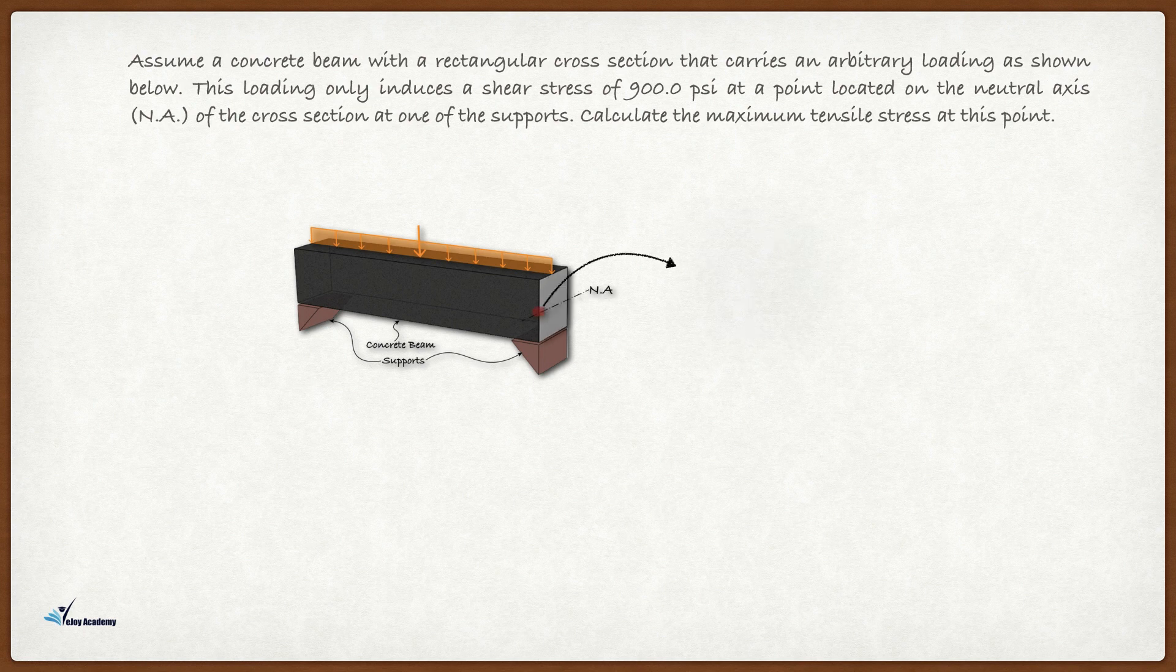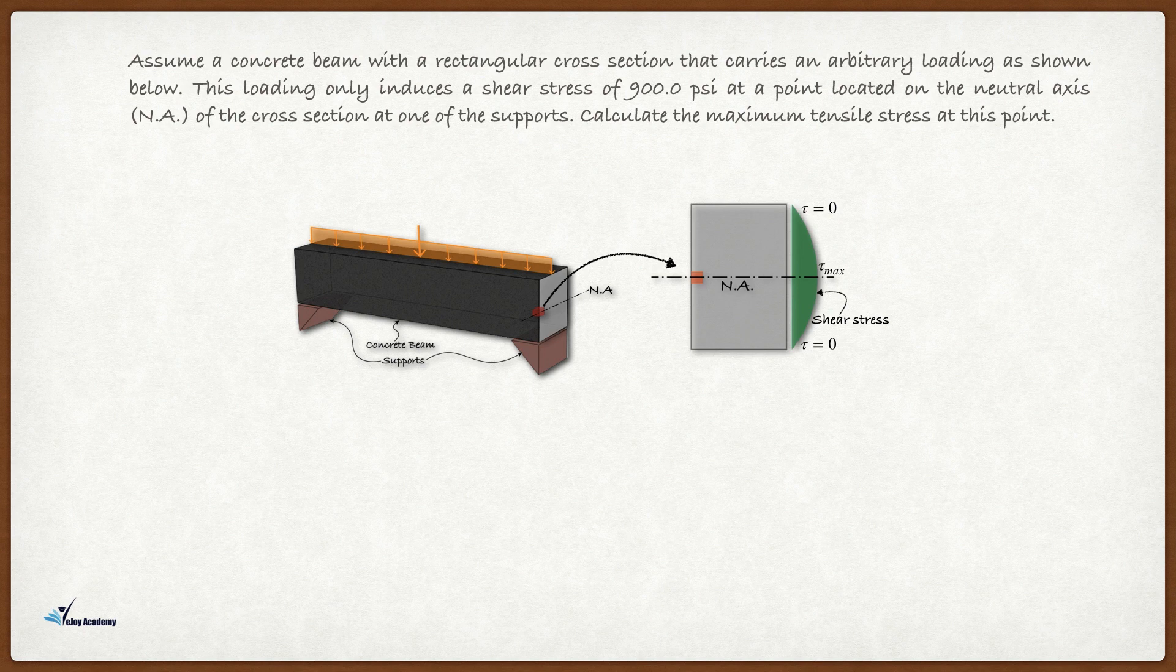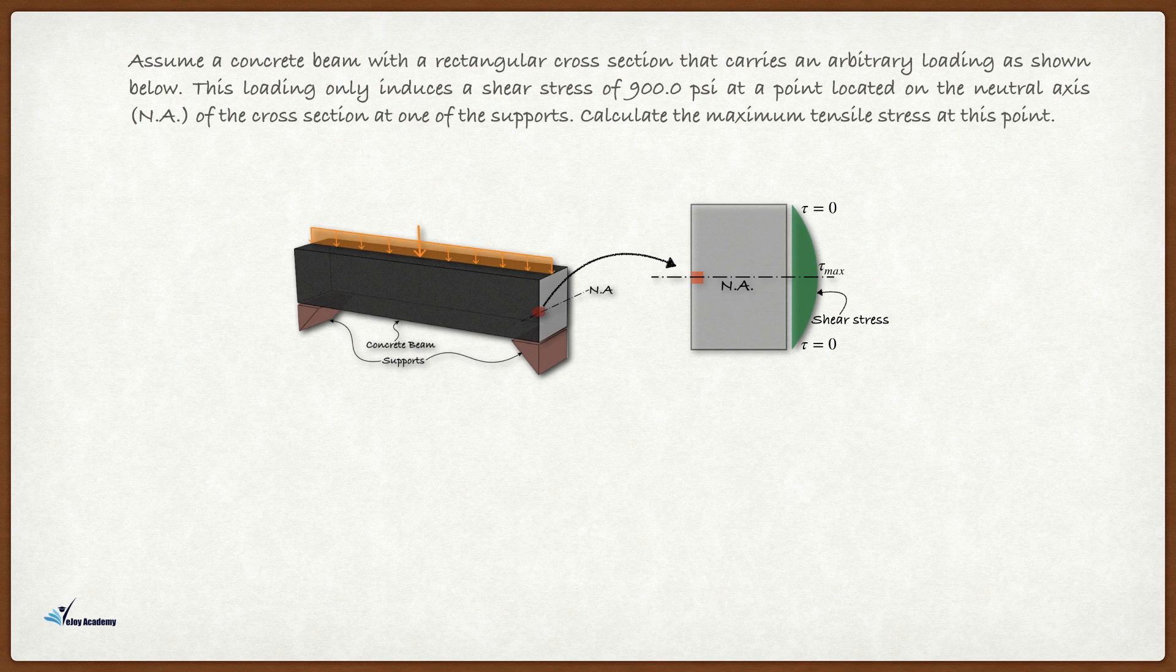Let's zoom in and illustrate the shear stress at this particular point, but before that I need to highlight a few points here. First of all, note that for a rectangular cross-section shear stress is maximum on the neutral axis and zero at the top and bottom.